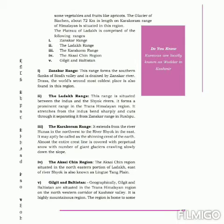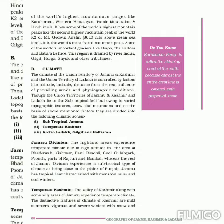Iske baad hai Gilgit and Baltistan. Geographically, Gilgit and Baltistan are situated in the Trans-Himalayan region on the north-western corridor of Kashmir valley. It is a highly mountainous region. The region is home to some of the world's highest mountainous ranges like Karakoram, western Himalayas, Pamir mountains and Hindu Kush. Yaini ki jagraafiayi lihaaz se Gilgit and Baltistan waadi Kashmir ke shumal maghribi rahdari per Trans-Himalaya ke ilaakhe mein waqe hai.